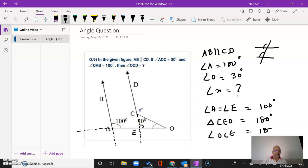It is 180 minus 130, that is 50 degrees. So I get this as 50 degrees. What does this become now?